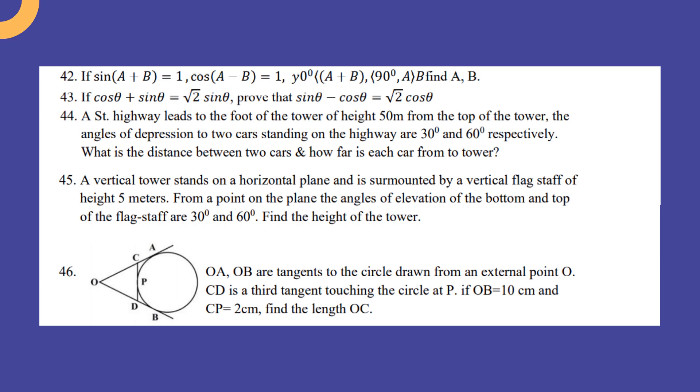A vertical tower stands on a horizontal plane and is surmounted by a vertical flag staff of height 5 meter. From a point on the plane, the angle of elevation of the bottom and the top of the flag staff are 30° and 60°. Find the height of the tower.